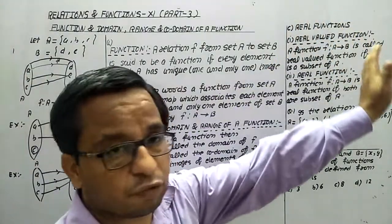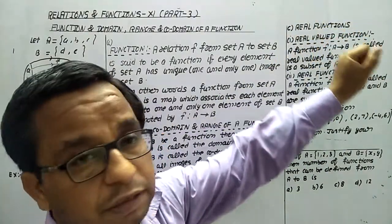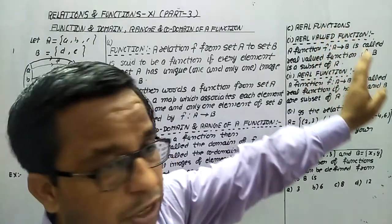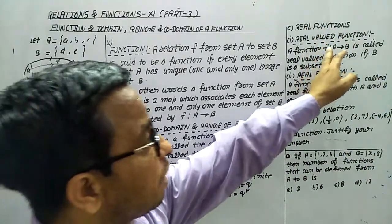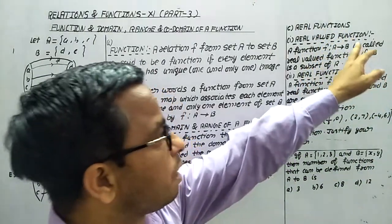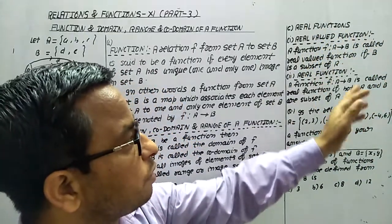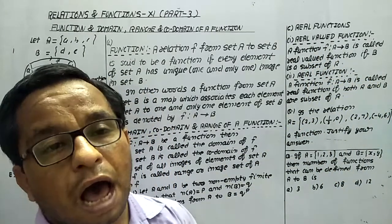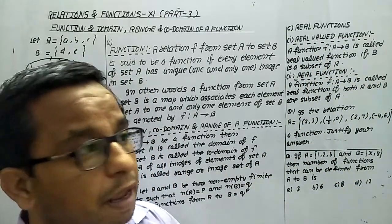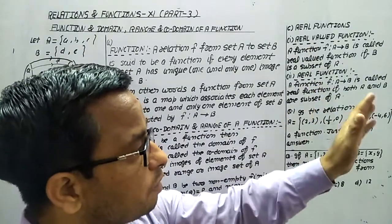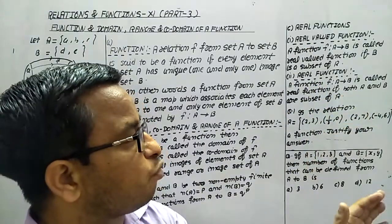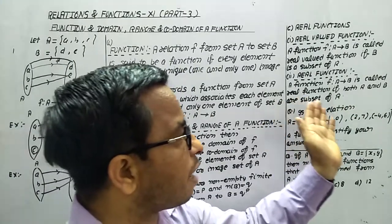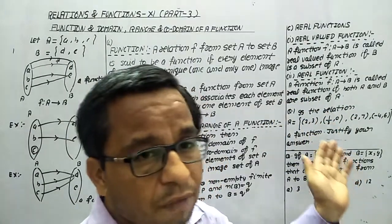These are two terms you have to keep in mind: real functions. In real function, first is real valued function — a function F: A to B is called a real valued function if B is a subset of R, the real numbers. And a real function — a function F: A to B is called a real function if both A and B are subsets of R.